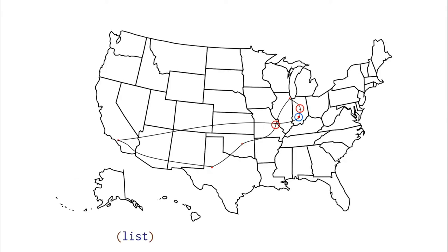Let's think about how we could represent that as an accumulator. When we get started, we haven't been anywhere, so our accumulator is going to start off as an empty list of places. Then when we travel to St. Louis, our accumulator contains just the place Bloomington.